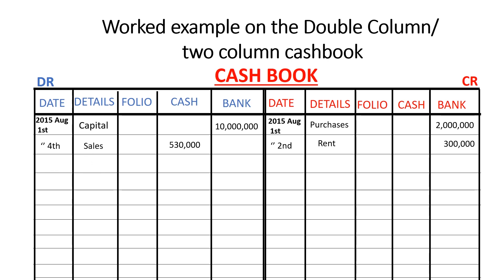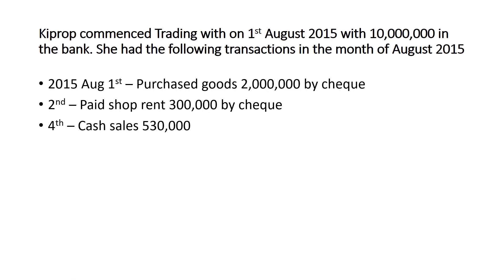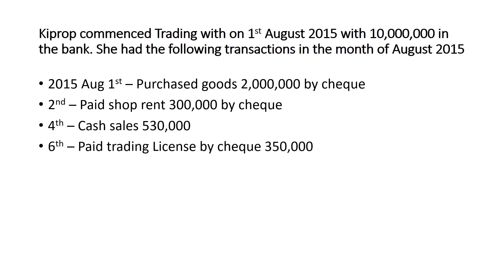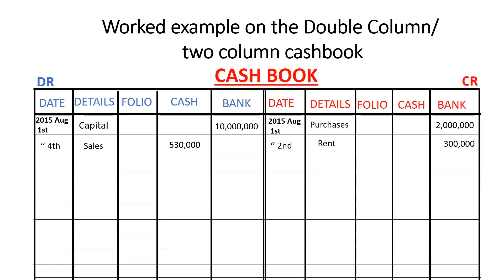Next, a trading license was paid by check. Again, the money in the bank is reducing — it has reduced by 350,000. So we credit the bank account and put the 350,000 in the bank column on the credit side of the cash book. The other item affected is trading license expense, and this took place on 6th August.